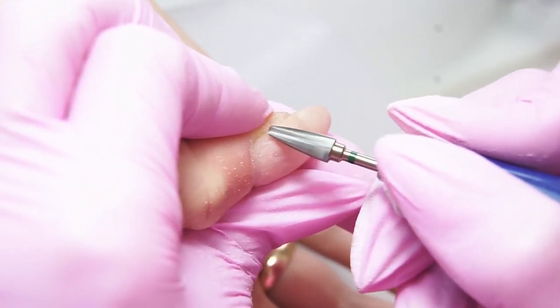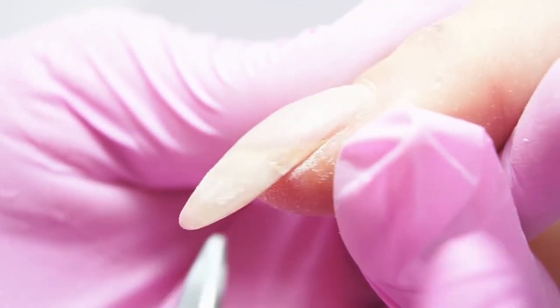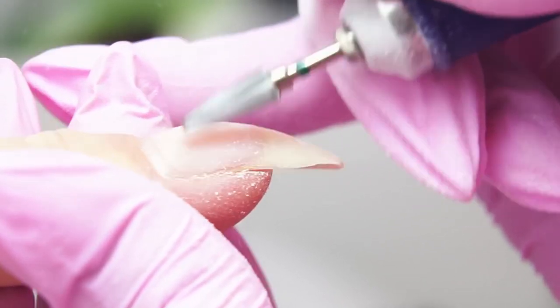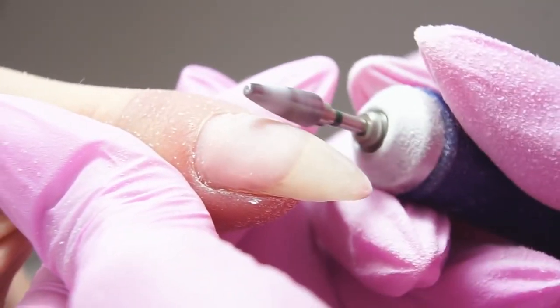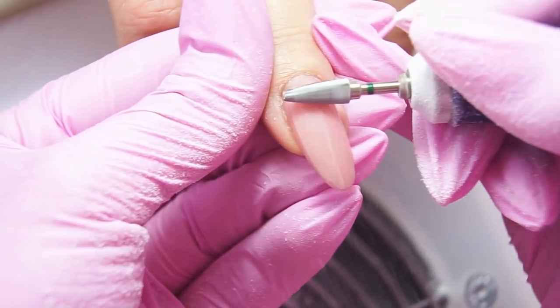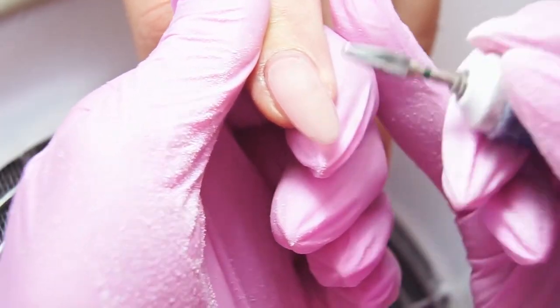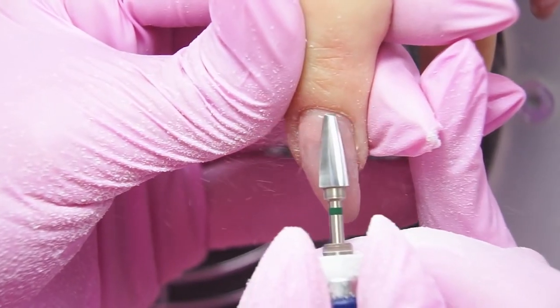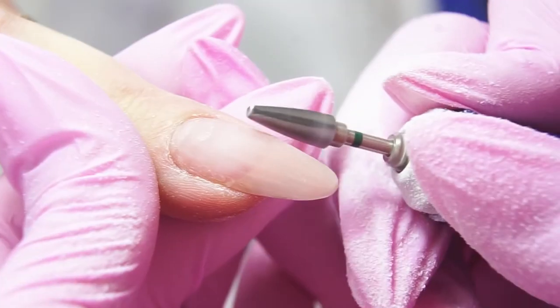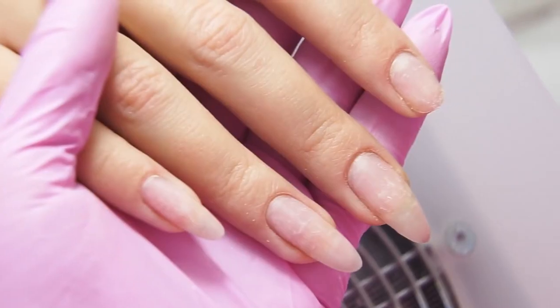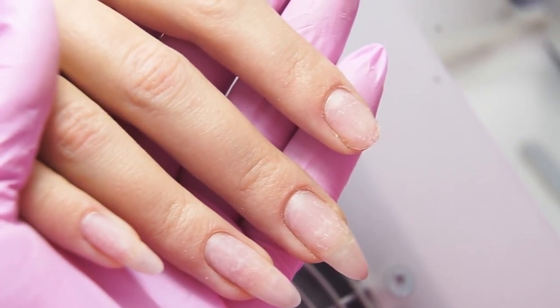There's a crack on the thumb, it needs to be repaired. That's how the nails look after removing the material.